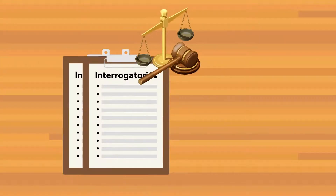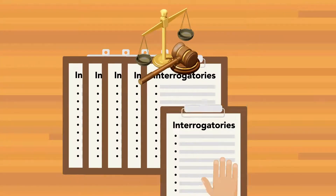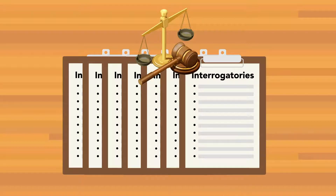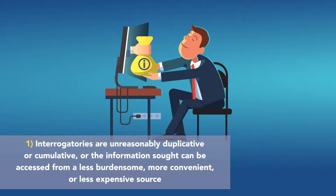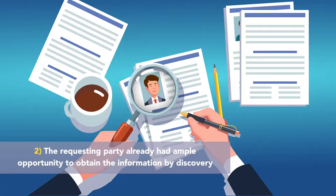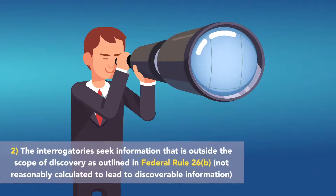Although the court has the discretion to allow more than the standard number of interrogatories, the court must limit interrogatories in the same situations it would limit other discovery, such as where interrogatories are unreasonably duplicative or cumulative, or the information sought can be accessed from a less burdensome, more convenient, or less expensive source, the requesting party already had ample opportunity to obtain the information by discovery, or the interrogatories seek information outside the scope of discovery as outlined in Federal Rule 26.